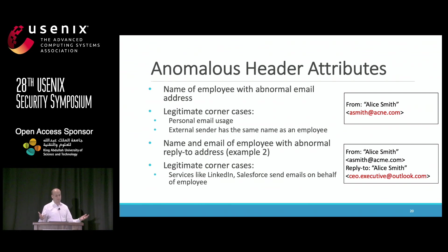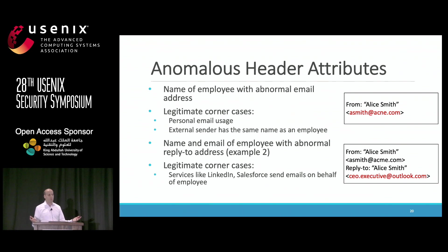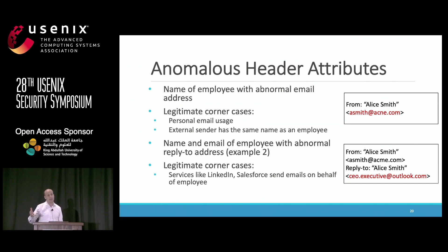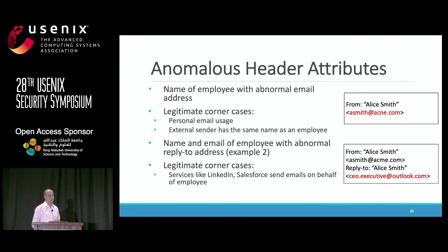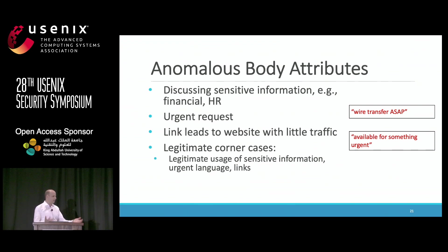Each one of these attributes on its own has many legitimate use cases. Getting an email from a colleague with an unfamiliar email address has legitimate explanations — sporadic use of personal email is common, especially in a university setting, or you could have an external sender whose name coincidentally matches someone inside the company. Even the reply-to anomaly has legitimate cases: services like LinkedIn and Salesforce legitimately impersonate people to capture responses. And getting an email with an urgent wire transfer request could be normal if you genuinely owe a vendor money.